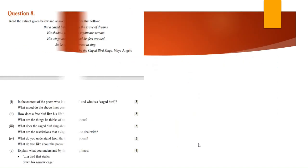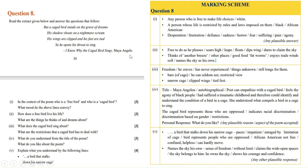Now let's move to the second poem, which is I Know Why the Caged Bird Sings by Maya Angelou. Question was: in the context of the poem, who is a free bird, who is a caged bird, and what mood do the above lines convey? Free bird is a person who is free to make life choices, or white Americans. Caged bird is a person whose life is restricted by rules and laws imposed on them, or black or African Americans.